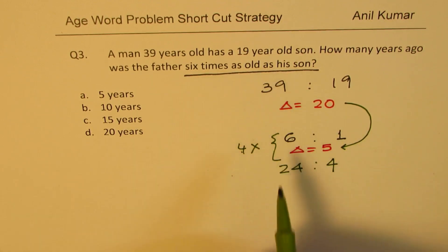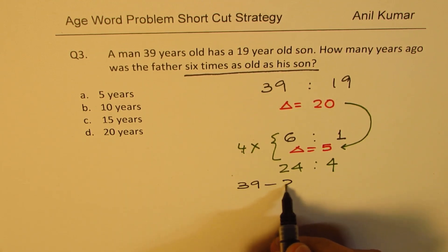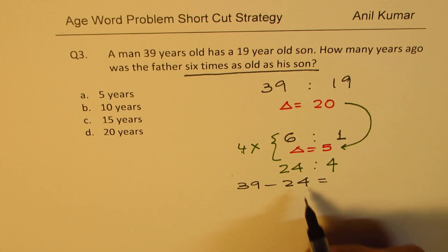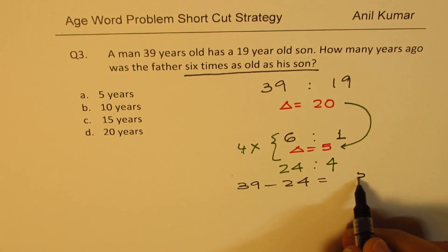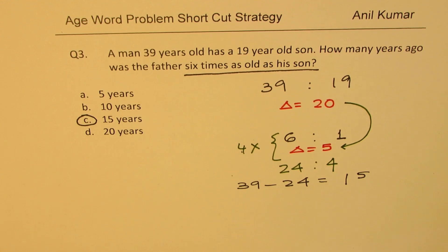So it was when father was younger by how much? 39 minus 24. That is our answer. We'll do 39 take away 24 to get the answer, which is 15. So option C is the right option.